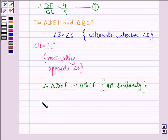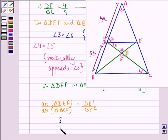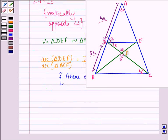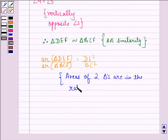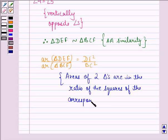Therefore, triangle DEF is similar to triangle BCF again by angle-angle similarity criterion. Since these two triangles are similar, therefore, area of triangle DEF upon area of triangle BCF is equal to DE square by BC square because we see that areas of two triangles are in the ratio of the squares of the corresponding sides.